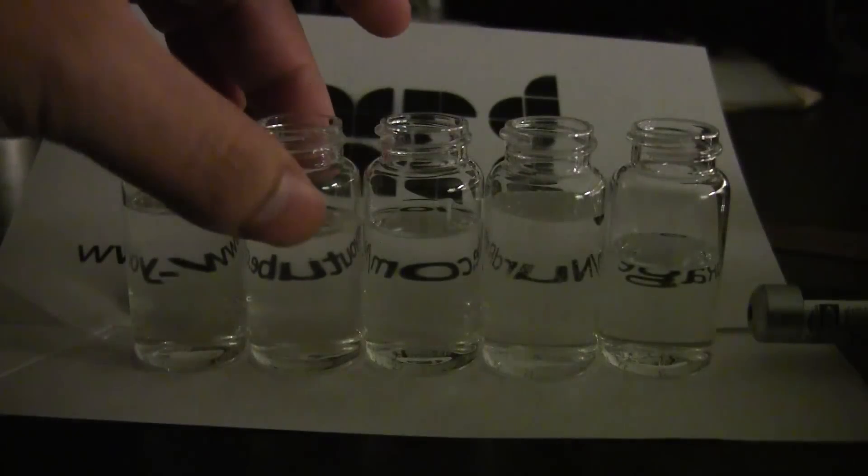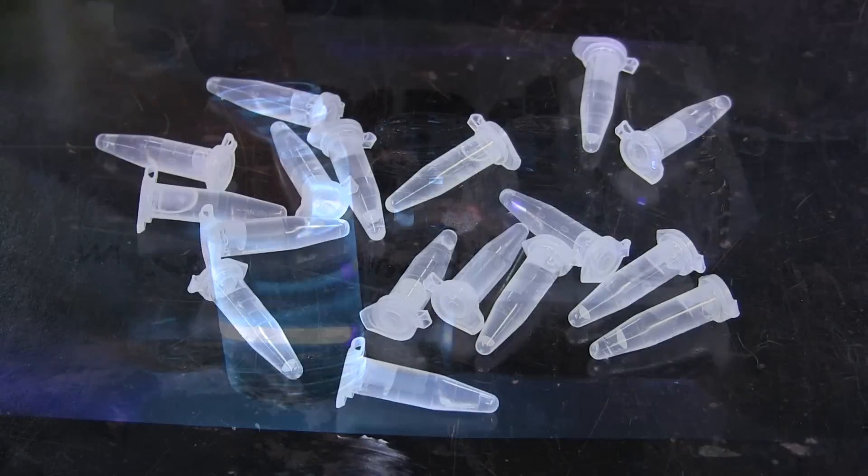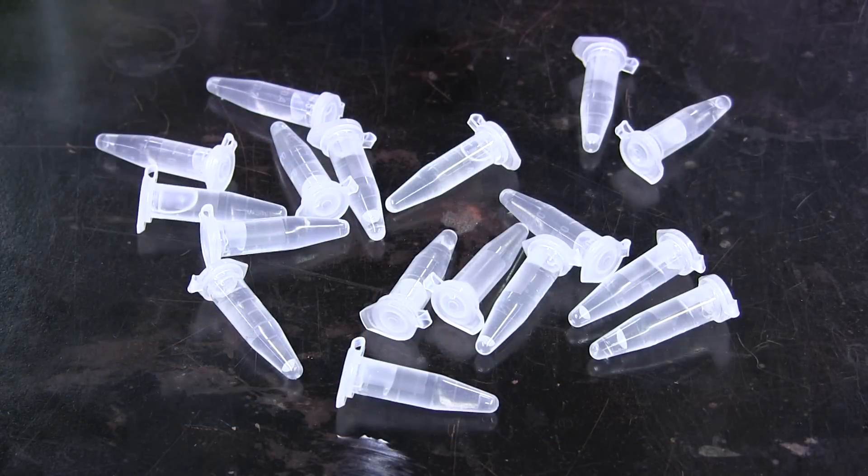In this scenario we have a bunch of water samples and some of them are contaminated with toxic levels of E. coli. Now to each one we have added a specially engineered dye that fluoresces when it comes into contact with E. coli. Can you tell just by looking at it which ones are contaminated?